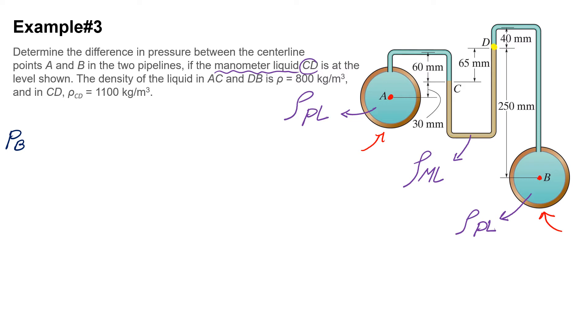So pressure at point B - we don't have it. Now I'm going to go up all the way to point D. I know that pressure at point D is exactly equal to pressure at this point, because they are exactly at the same horizontal plane. So because I'm going up, it's going to have a negative sign: minus ρPL g hBD.